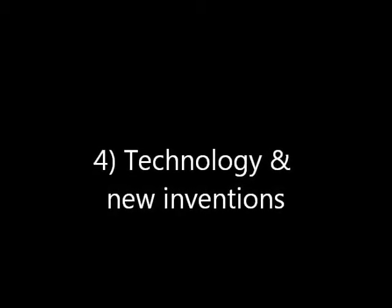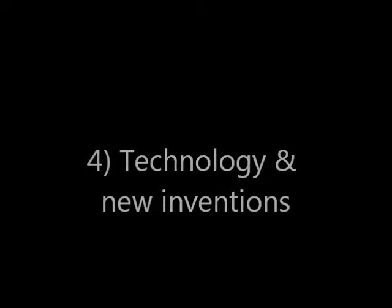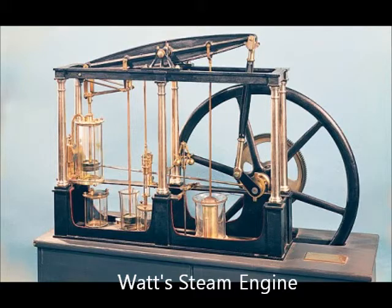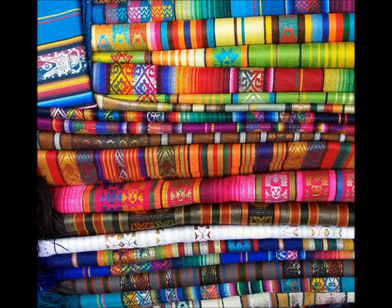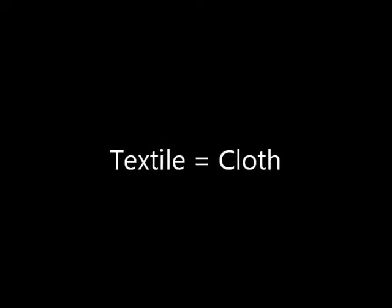Fourth and finally: technology. Great Britain developed technologies to create steam power using water and coal, which enabled them to power large machines in factories. One of the most famous inventions was the steam engine, first made by James Watt. Steam technology was used to power large looms in textile factories. Textile is a fancy word for cloth — we need cloth to make the clothing you buy at stores.